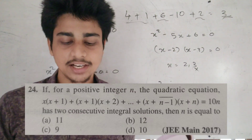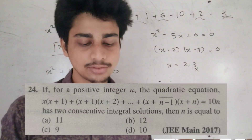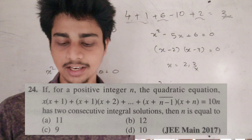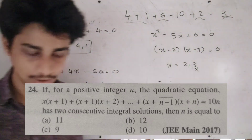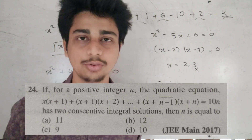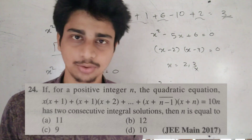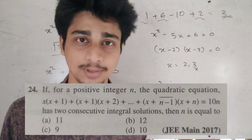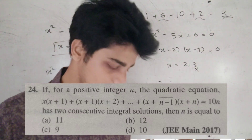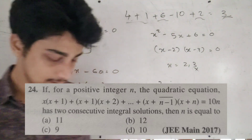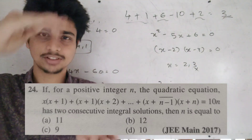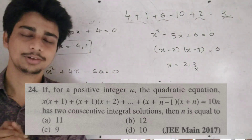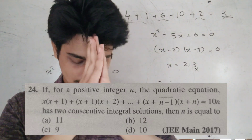If for a positive integer n, the quadratic equation x(x+1) + (x+1)(x+2) = 10n has two consecutive integral solutions, then n equals what? Hint: let the solutions be α and α+1, substitute into the equation and subtract. This is a medium-level question. We'll cover it in the next video — bye! Like, share, and subscribe to our channel.